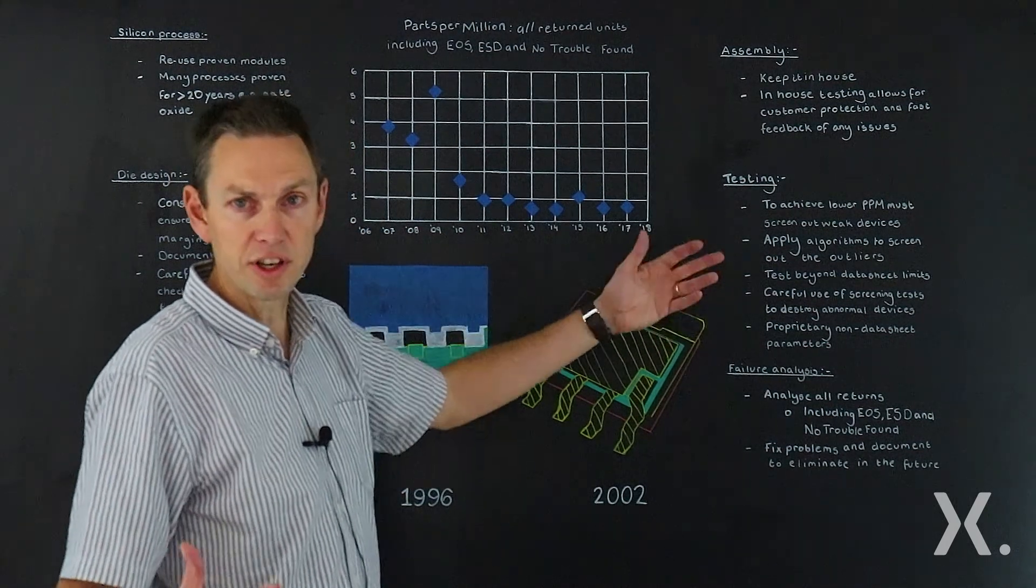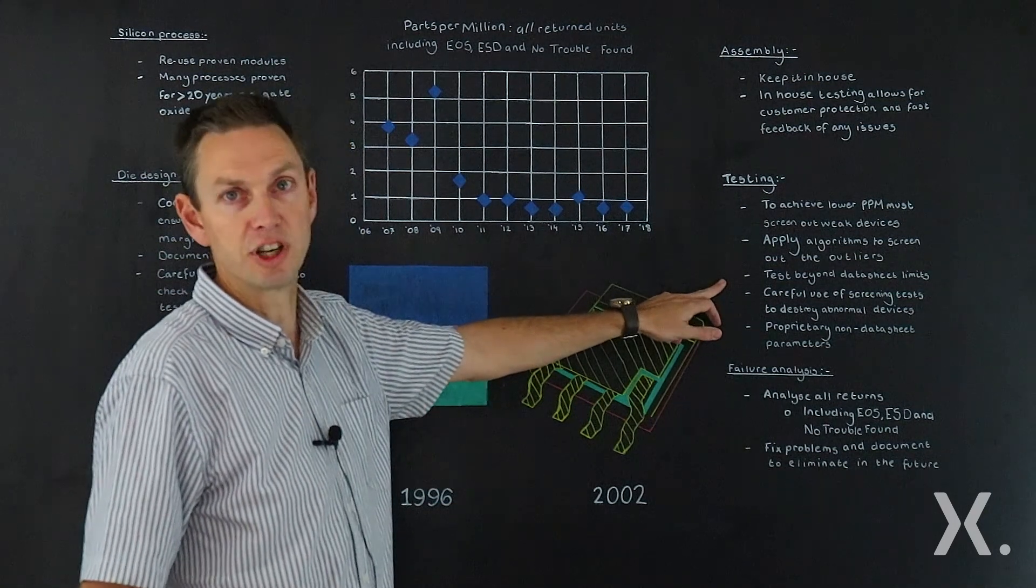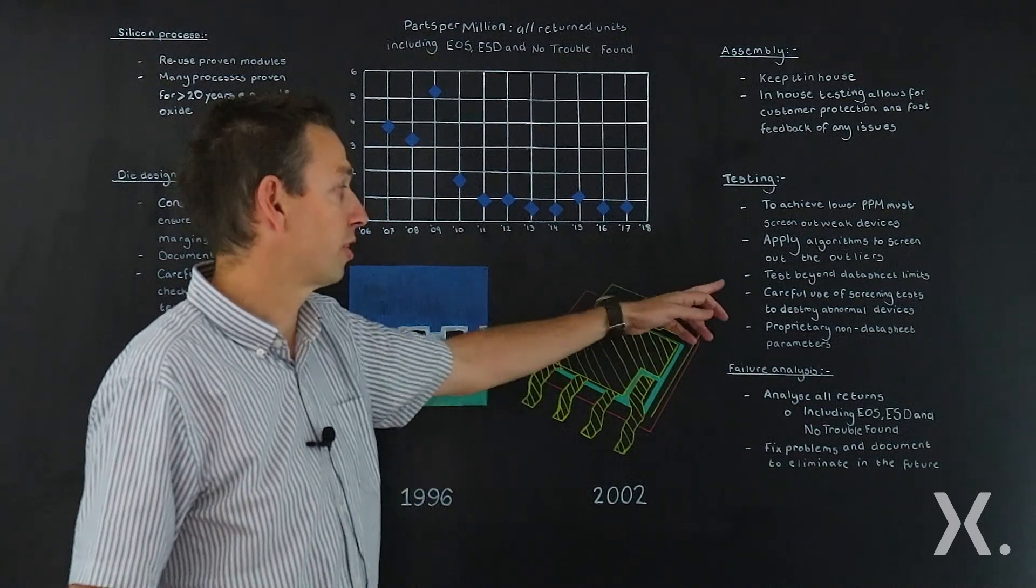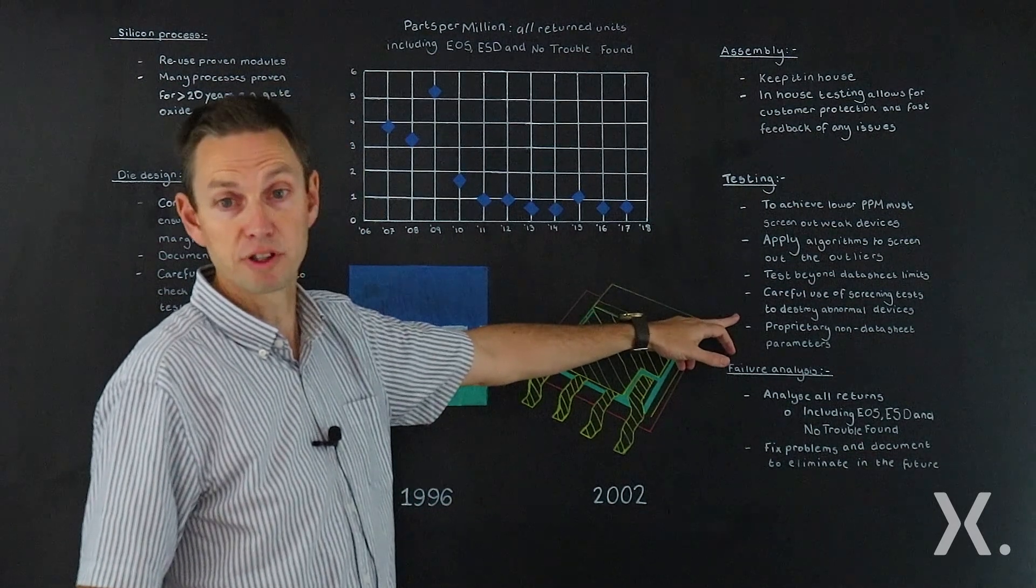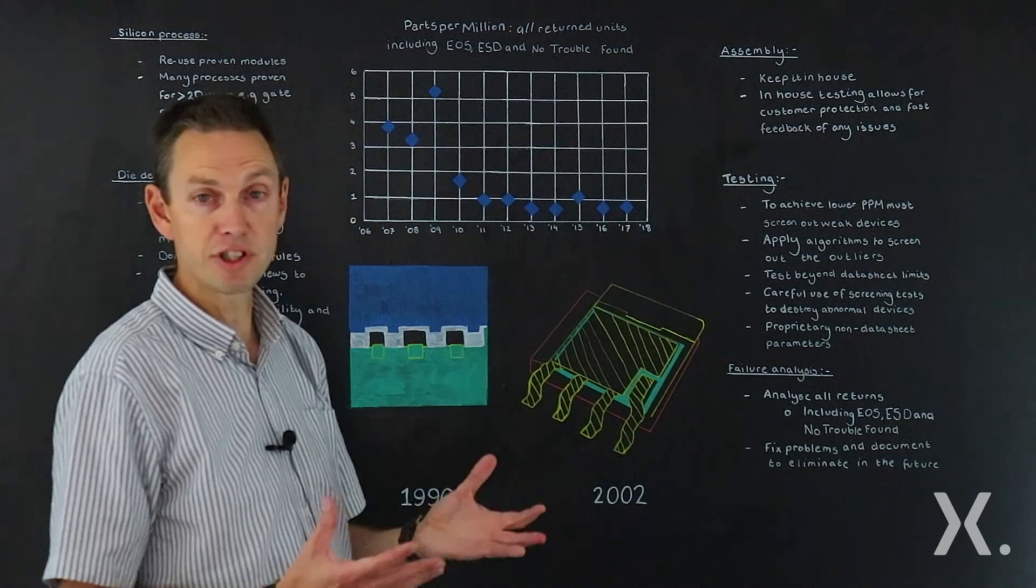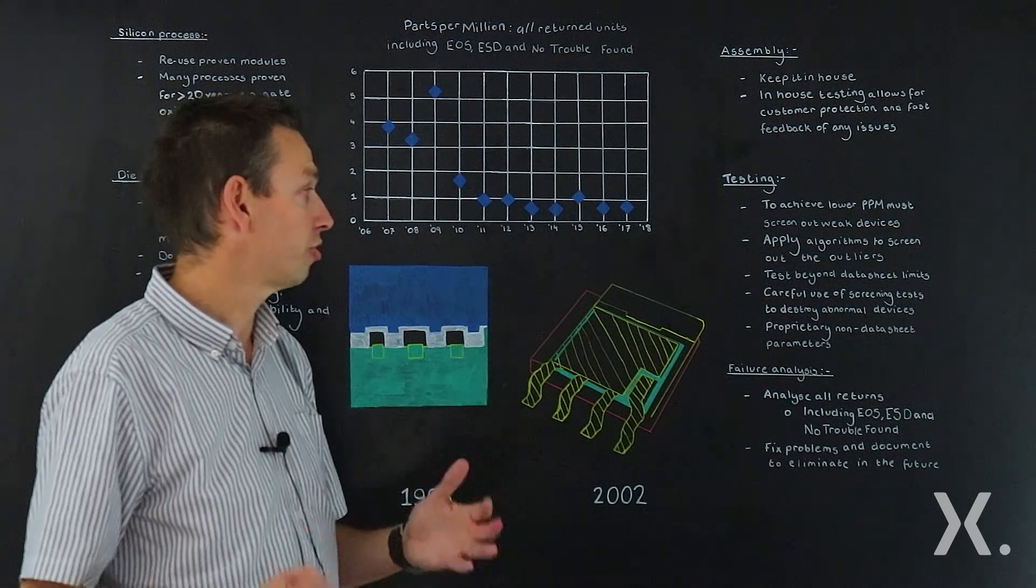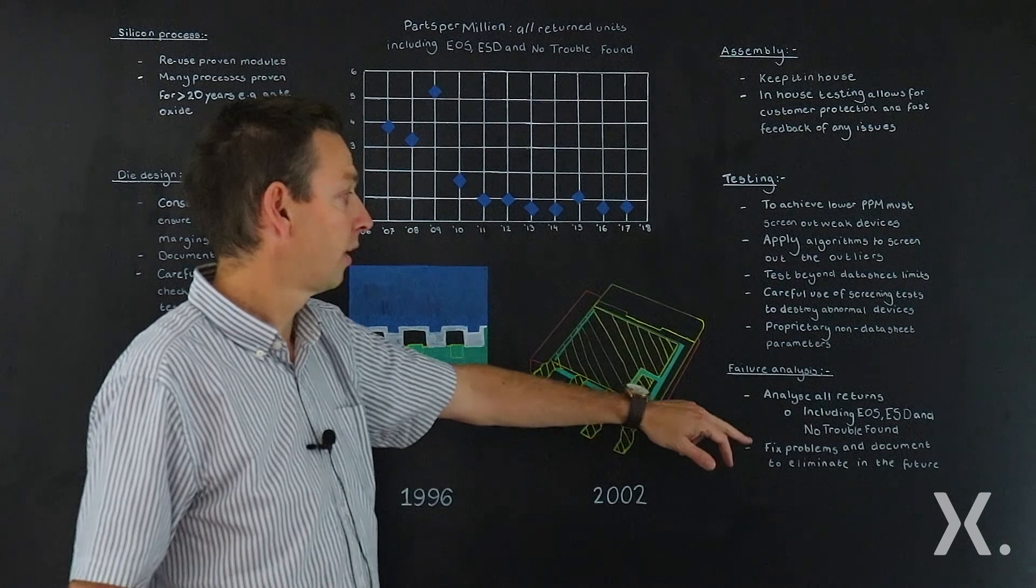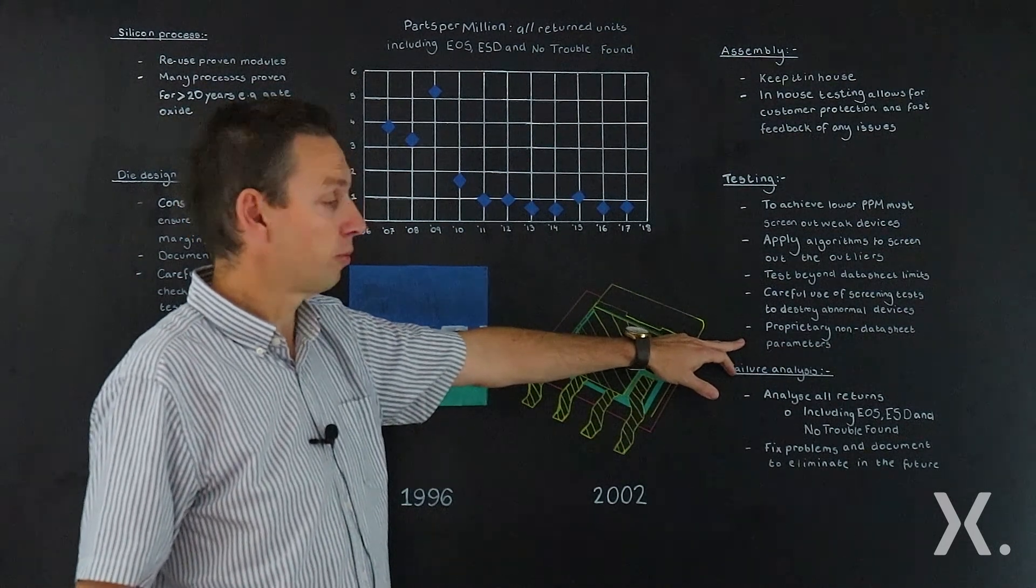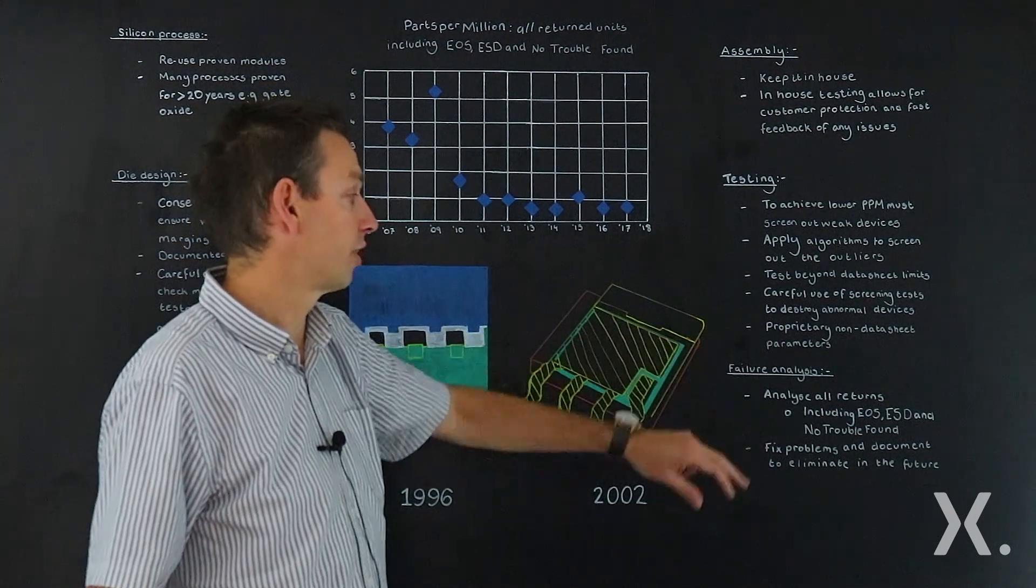Also key, we have a data sheet, and of course we'll test the data sheet to guarantee it to the customer, but we apply testing beyond the data sheet limits to find weak devices and make sure they're not shipped. Not just parametric testing, but also we apply special tests, stress tests, to try and destroy any weak devices. Devices that wouldn't show up in a parametric value, but generally weak devices, we screen them with a stress test to make sure we destroy them. And finally, on the data sheet, we have many parameters we test to, but we do a lot of testing with additional parameters which aren't data sheet parameters, but again, allow us to identify strange and weak devices.